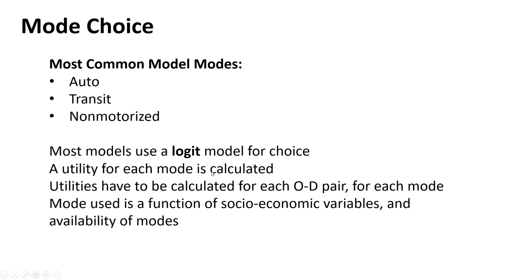Going back to the traditional model: mode choice is usually a logit model. We calculate the utility of each mode — for example, I can walk five miles but the utility would be pretty low. Driving to the grocery store has high utility, especially if I have stuff to bring back. We calculate the utilities of all travel options for a given trip.